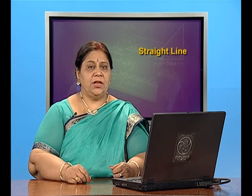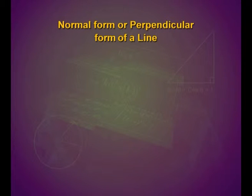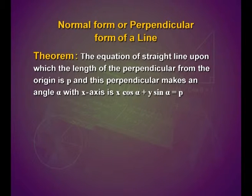Now let us discuss about the normal form or perpendicular form of a line. The theorem states: the equation of a straight line on which the length of the perpendicular from the origin is p, and this perpendicular makes an angle α with the x axis, is x cos α plus y sin α equals p.